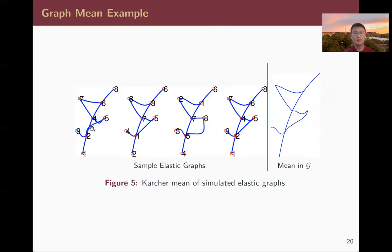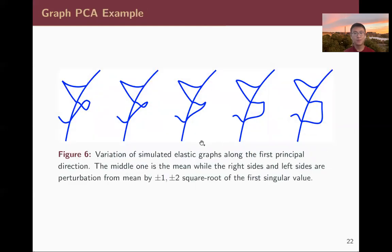In this data, the samples have different node orderings but the same main branch — for example, nodes 1,2,4,6,8 for one sample or 2,1,7,3,6 for another. The main branches are all the same while the side branches differ. We show variation along the first principal direction: the middle object is the mean, perturbed by positive and negative multiples of the square root of the first singular value. The main branches are kept the same throughout, while the variation comes from the side branches.